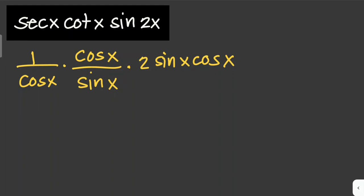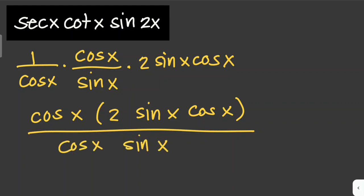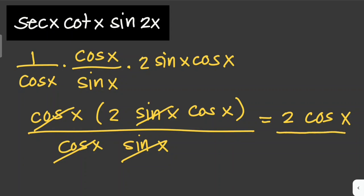Then we simplify by multiplying: cos(x) times 2·sin(x)·cos(x) over cos(x)·sin(x). The cos(x) terms cancel and the sin(x) terms cancel, leaving us with 2·cos(x). So 2·cos(x) is the answer for this problem.